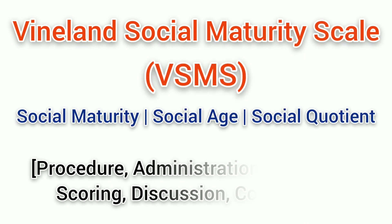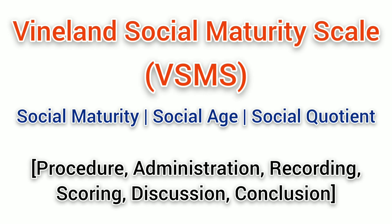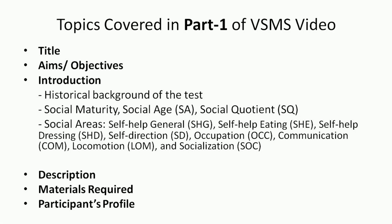Hello friends, welcome to the channel PsychoTech. This video will be Part 2 of the VSMS video. In Part 1, I had discussed the title, practical aims and objectives of the VSMS, introduction including historical background of the test, social maturity, social age, social quotient, and social areas — including self-help general, self-help eating, self-help dressing, self-direction, occupation, communication, locomotion, and socialization. I also discussed description of the test, materials required, and participant profile. If you haven't watched Part 1, you can find the link in the description.